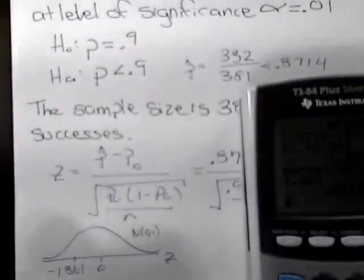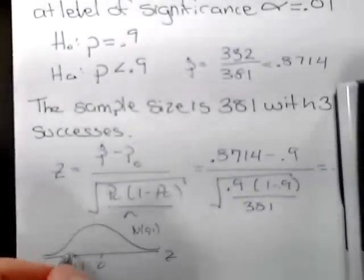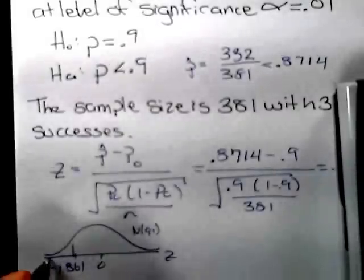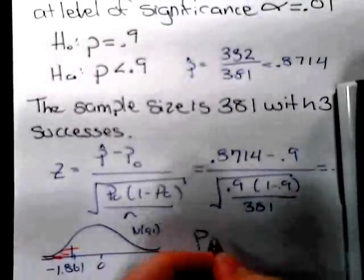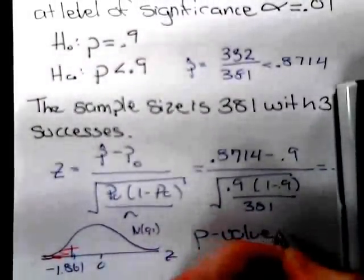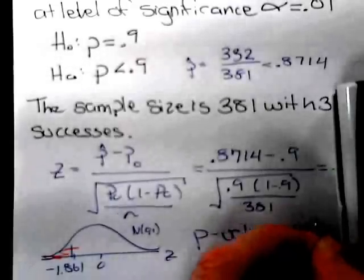This gives a p-value for this region right here of 0.0314.